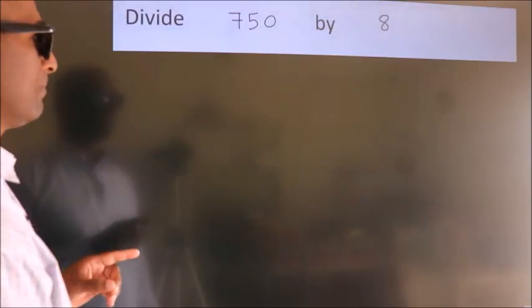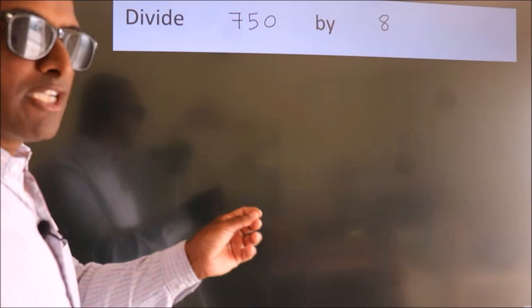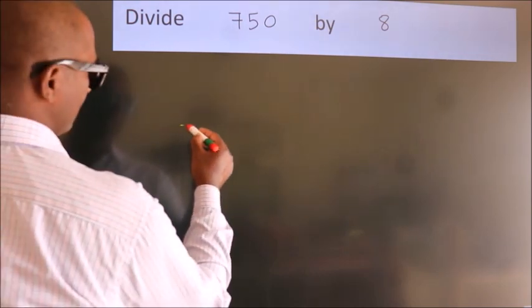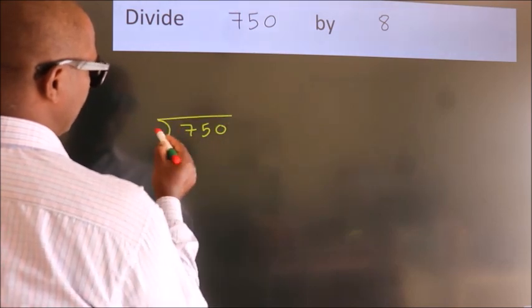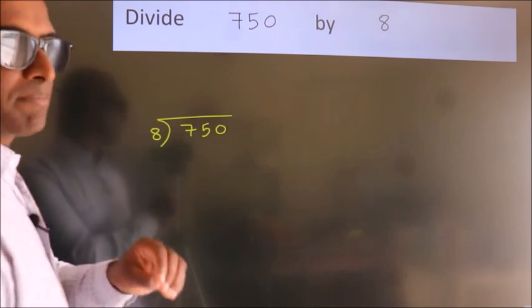Divide 750 by 8. To do this division, we should frame it in this way: 750 here, 8 here. This is step 1.